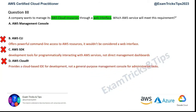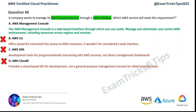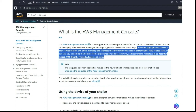We are left with our final answer: option A, AWS Management Console. It is a web interface through which you can easily manage and administer your entire AWS environment, including resources across regions and services — that's the correct answer. The AWS documentation highlights that the console homepage provides access to each service console and offers a single place to access the information you need to perform your AWS-related tasks.